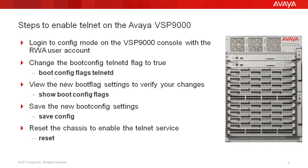In our example, we will log into the system with read-write-all privileges and enter configuration mode. We will change the boot config Telnet daemon flag and set that to true. This will enable the Telnet daemon to start once the system reboots. We will view the new boot flag settings to verify our changes, save the new boot config settings using the save config command, and finally reboot the system to enable the Telnet service.